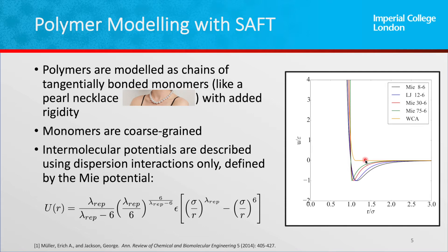Now, in order to provide a description of polymers that can be used in both the equation of states and molecular simulations, we use a consistent definition of polymers. We assume polymers are chains of tangentially bonded monomers — basically like a pearl necklace — where each segment is a pseudoparticle in contact with its neighbouring segments. These segments are not atomistically detailed; each one represents a group or a collection of atoms.